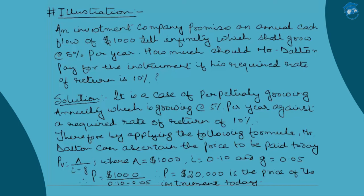The question states: an investment company promises an annual cash flow of 1000 USD till infinity, which shall grow at 5% per year. How much should Mr. Dalton pay for the instrument if his required rate of return is 10%? The annuity cash flow of 1000 USD will be growing at 5% till infinity, and we are required to calculate the present value of such an infinite growing annuity at a required rate of return of 10%.